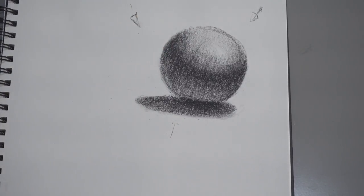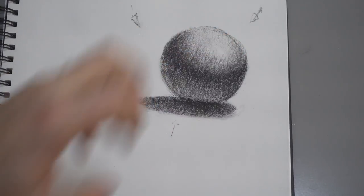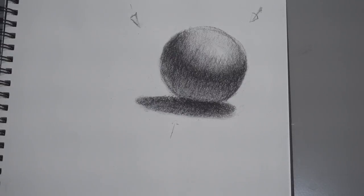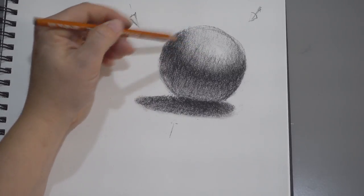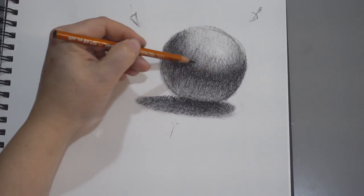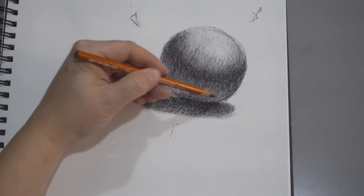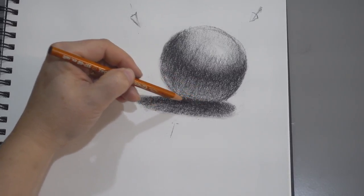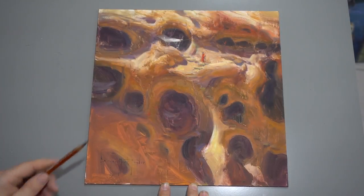All right, so that's a quick way to create a sphere shape to get it feeling nice and round. We got highlight, halftone, core shadow. This is a soft transition between halftone and core shadow. Reflected light, occlusion shadow here, and then general cast shadow.